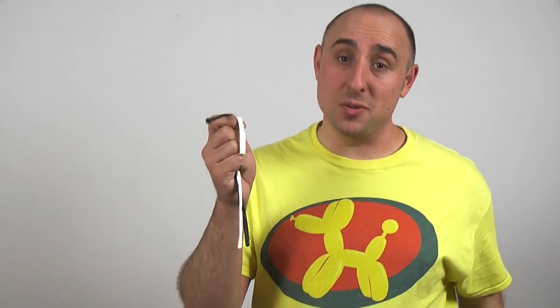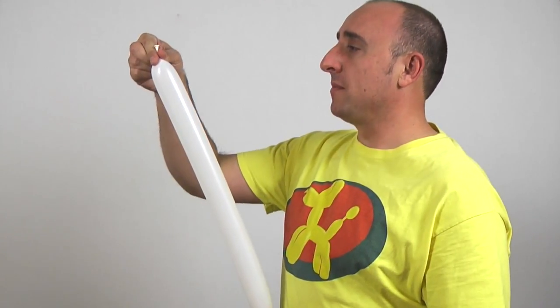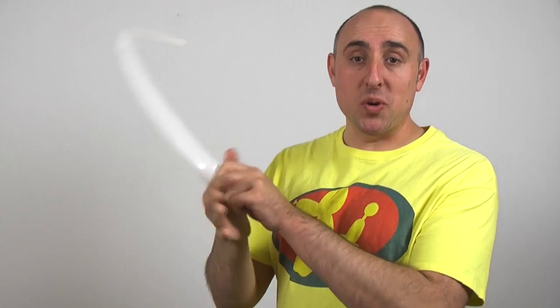For this design you'll need two balloons. I'll be using a white 260 and a black 260. We're going to start with the body of our sheep. Get your white 260 and inflate it halfway. Let some out and tie.